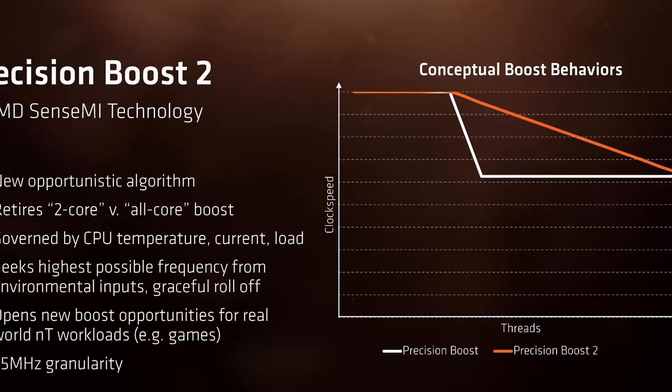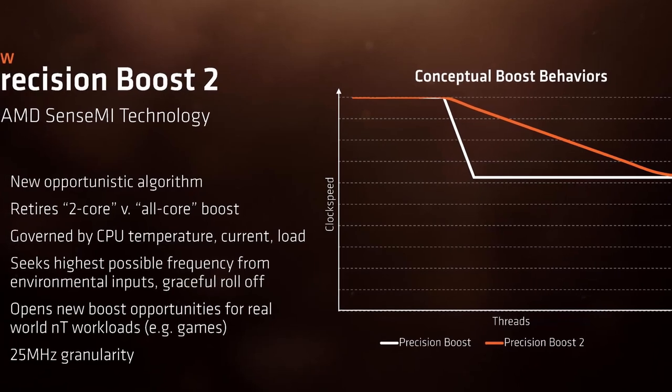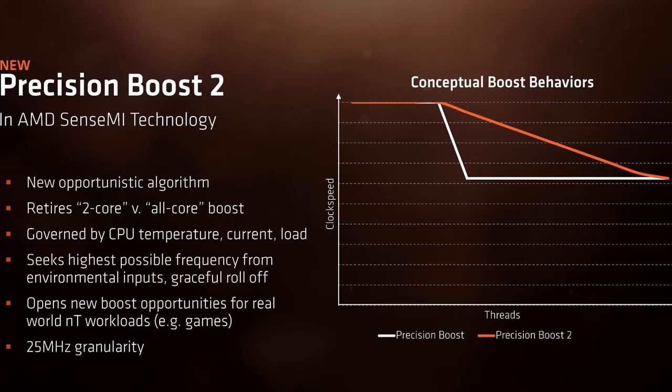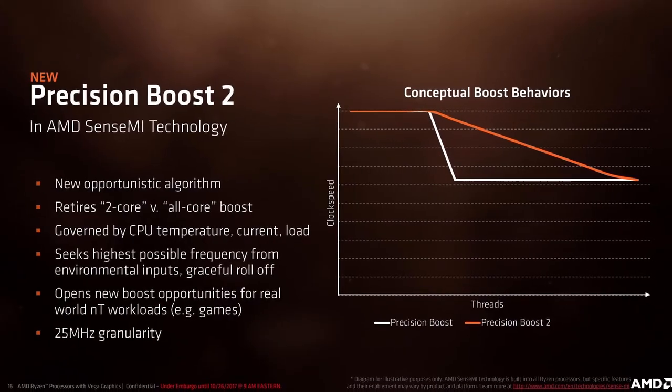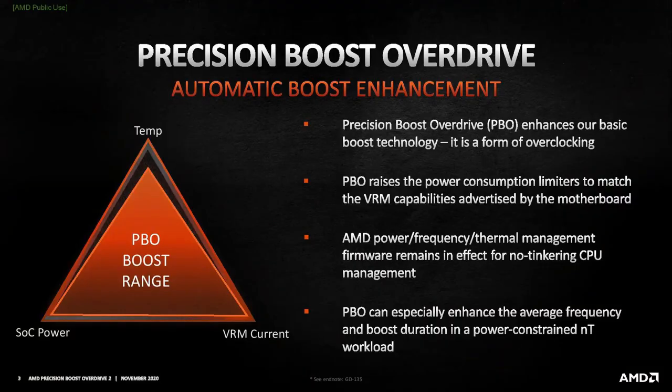Any aspiring AMD overclocker should be familiar with the term PBO. PBO stands for Precision Boost Overdrive, which is an extension of the Precision Boost technology present in all AMD Ryzen CPUs. Precision Boost allows the CPU to opportunistically increase its clock frequency over base frequency based on the available power and thermal headroom.